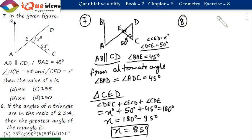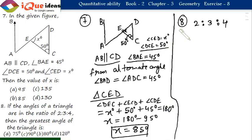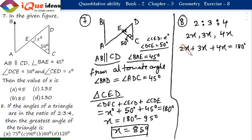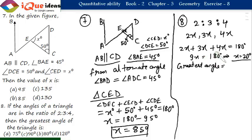Question number 8: the angles of a triangle are in the ratio 2:3:4. Let the angles be 2x, 3x, and 4x. Their sum must equal 180 degrees: 2x plus 3x plus 4x equals 180 degrees, so 9x equals 180 degrees, giving x equals 20 degrees. The greatest angle is 4x, which equals 4 times 20, that is 80 degrees.